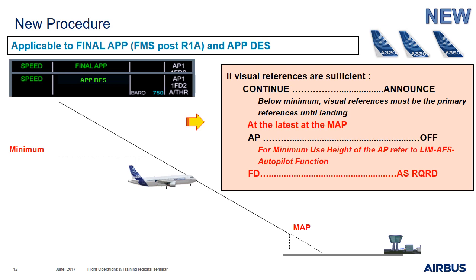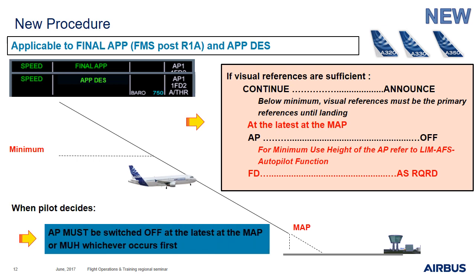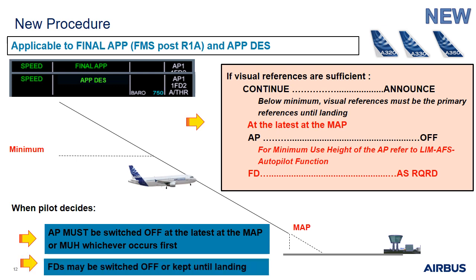You can keep the FD or decide to switch it off, depending on conditions that will be given in the following slides. So when the pilot decides, the AP must be switched off at the latest at the missed approach point or the minimum use height of the AP, whichever occurs first. The FDs may be switched off or kept until landing, depending on the guidance.